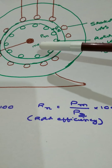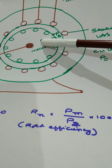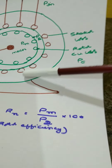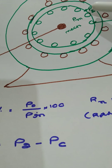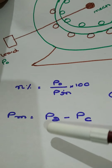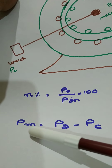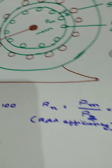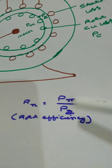Rotor efficiency is the output divided by input in the rotor side — that is mechanical power developed PM divided by rotor input P2. PM is nothing but P2 minus rotor copper losses, which gives the mechanical power developed. So PM by P2 gives you the rotor efficiency.